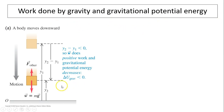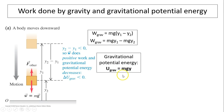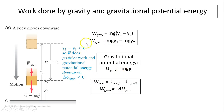Work done by gravity and gravitational potential energy: as a body moves downward, work done by gravity equals mg times the displacement, the change in position, y1 minus y2. This quantity, mgy, is called gravitational potential energy. We rewrite the equation as U-gravitational-1 minus U-gravitational-2, which is a negative change in gravitational potential energy. So when an object moves downward, work done by gravity is positive, and as a result its gravitational potential energy decreases. That's why the negative sign is essential.